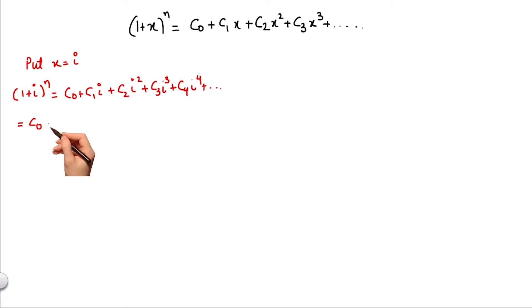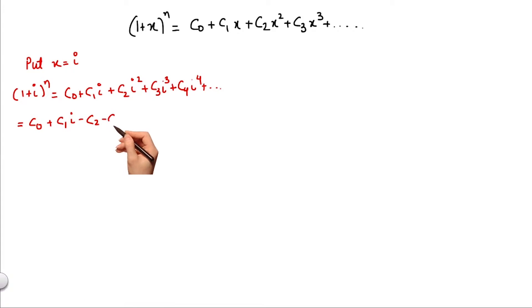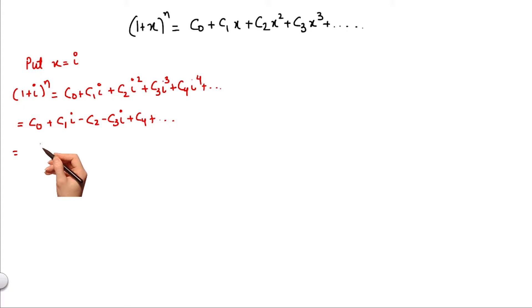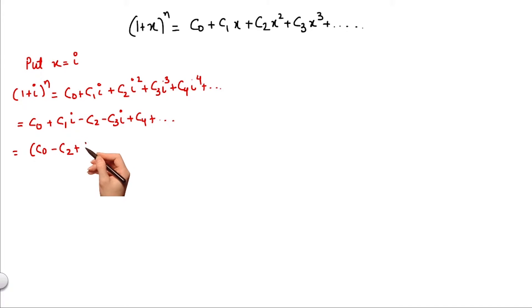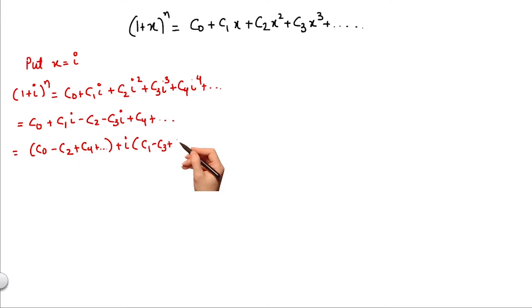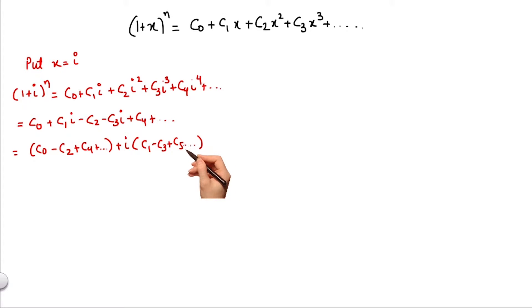Simplifying this, we get c0 + c1·iota − c2 − c3·iota + c4 and so on. Separating the real and imaginary parts, the real part is c0 − c2 + c4 and so on, with alternate plus and minus signs, plus iota times (c1 − c3 + c5 and so on), again with alternate plus and minus signs.